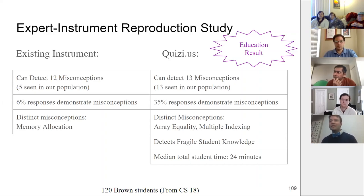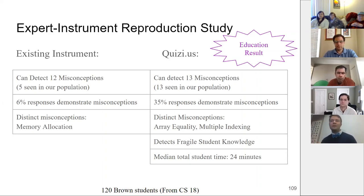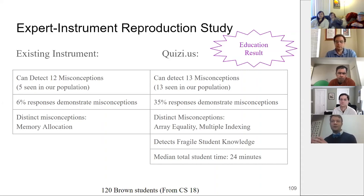Even though we offloaded much of the question generation work to students, the burden on any individual student wasn't very large. On average, students spent about 10 minutes writing a program and then about two minutes on each of a dozen other programs providing the expected output.